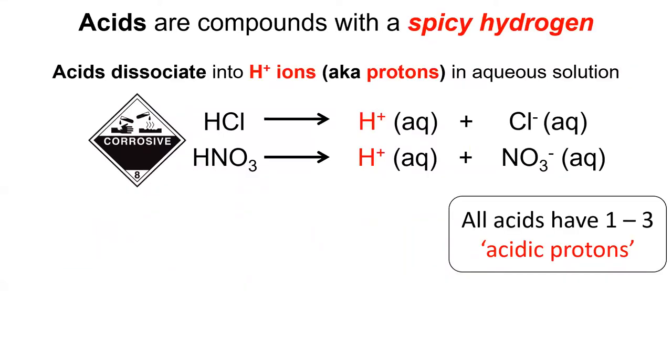In the past, I referred to acids as having a spicy hydrogen, by which I mean an H+ ion. H+ ions are commonly called protons because that's what they are. When acids are added to water, they dissociate into an H+ ion and a counter ion. For example, when hydrochloric acid is added to water, it dissociates into a proton and a chloride anion. Nitric acid dissociates into a proton and a nitrate ion.